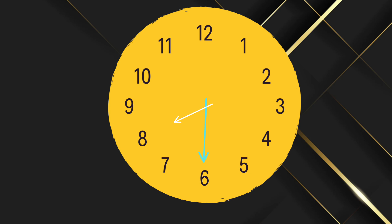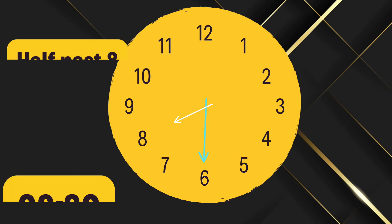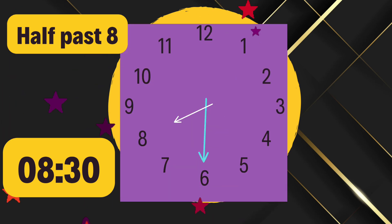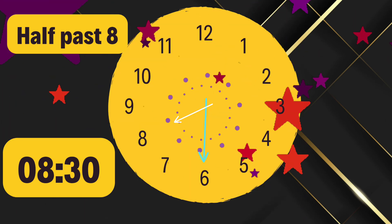Question two: if the hour hand is on eight and the minute hand is on six, what's the time? The answer is half past eight. Amazing job — you're getting better at this!